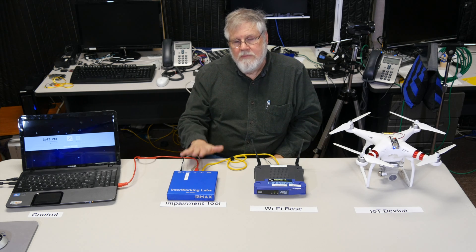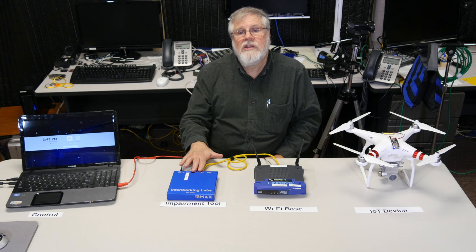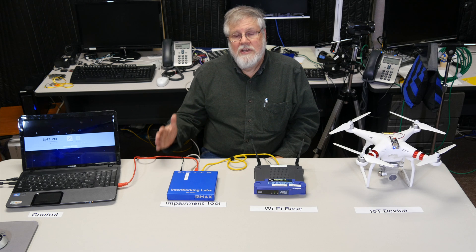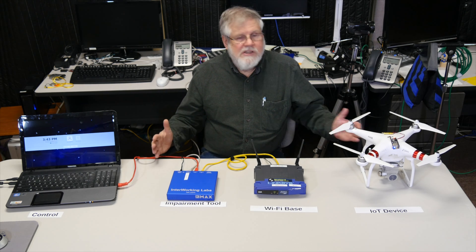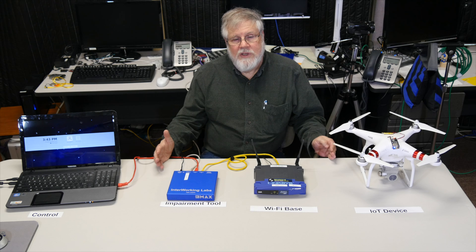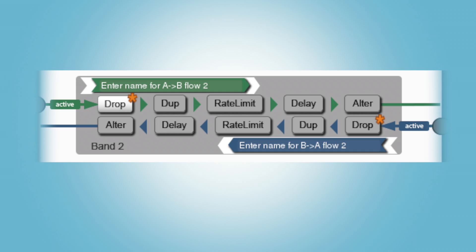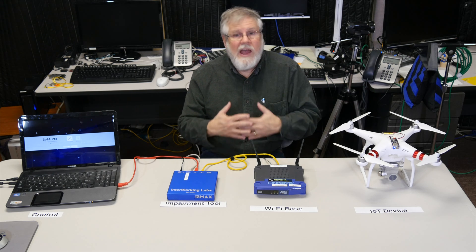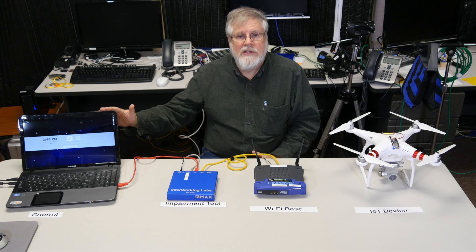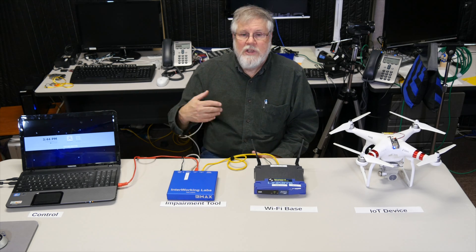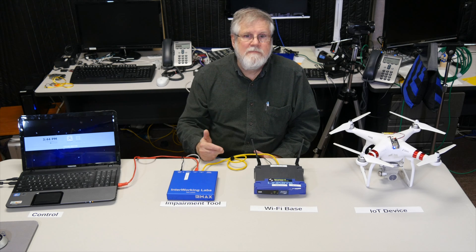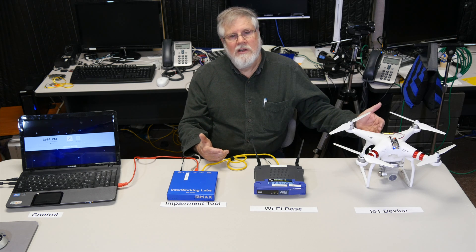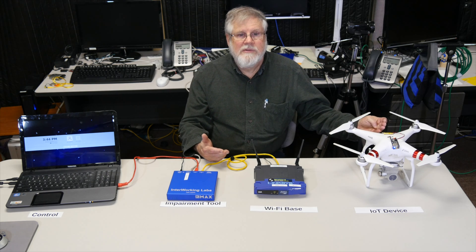We're going to impose the packet loss rates that we measured as we were out flying. In our tests, we're going to start with the drone being effectively near our access point, and we'll dial in a loss rate of zero. Then we'll fly the drone in a virtual sense out 10 meters, and we'll dial in the packet loss rate that we experienced at 10 meters. We'll keep moving out every 10 meters and increase the packet loss rate to what we observed in the field, watching how our application degrades at those various distances.